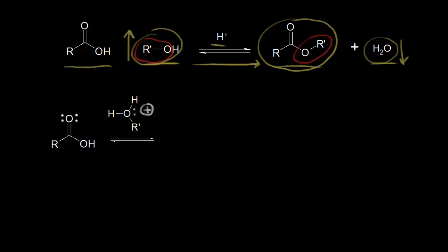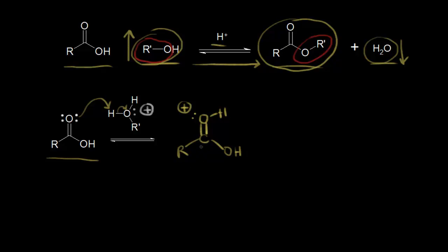Let's take a look at the mechanism to form esters. We start with our carboxylic acid, and we're going to protonate the oxygen. A lone pair of electrons on the oxygen can pick up a proton, leaving these electrons behind. We can show that we have now protonated the oxygen, so it gets a plus one formal charge. Protonation of your carbonyl activates it and makes your carbon more electrophilic.